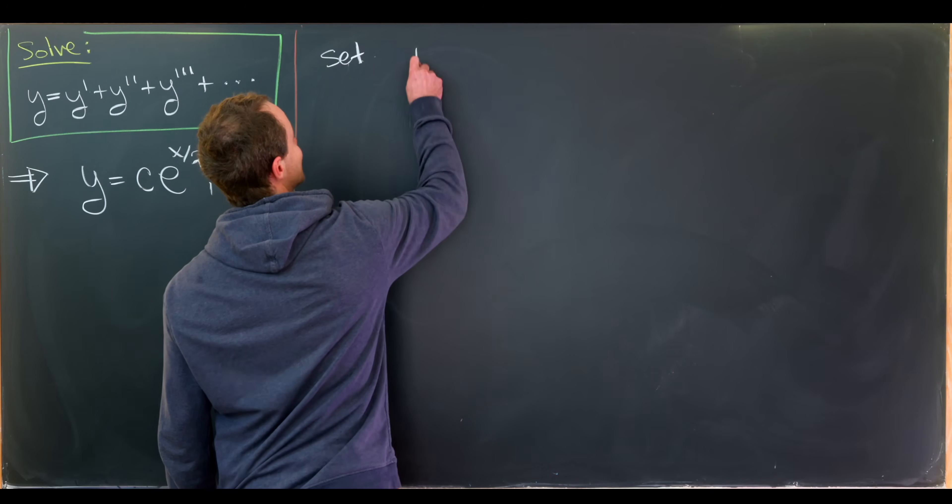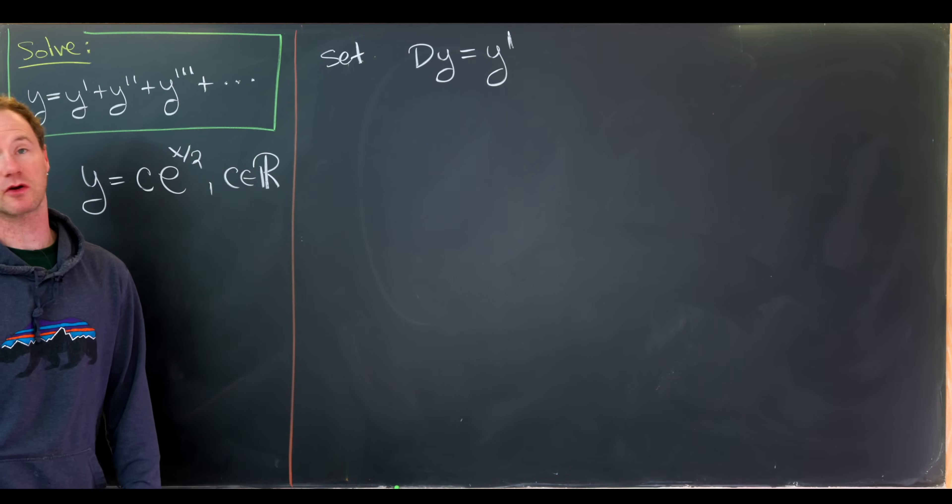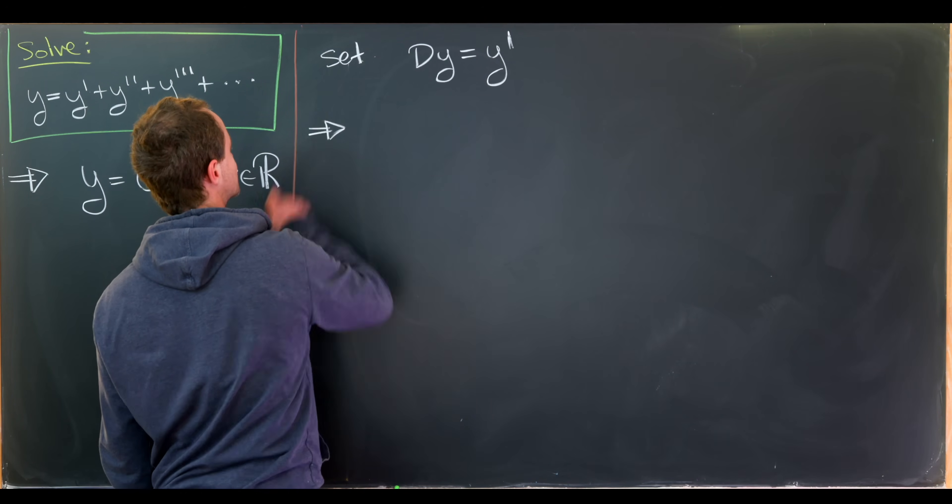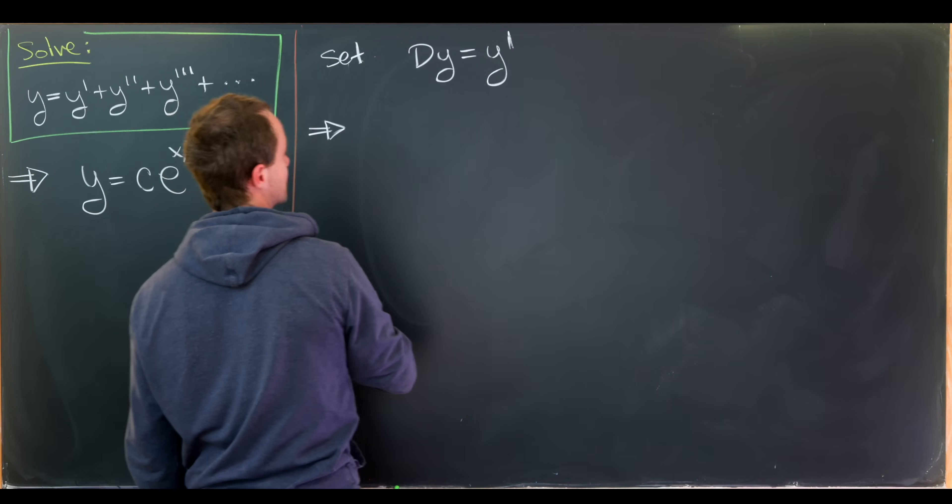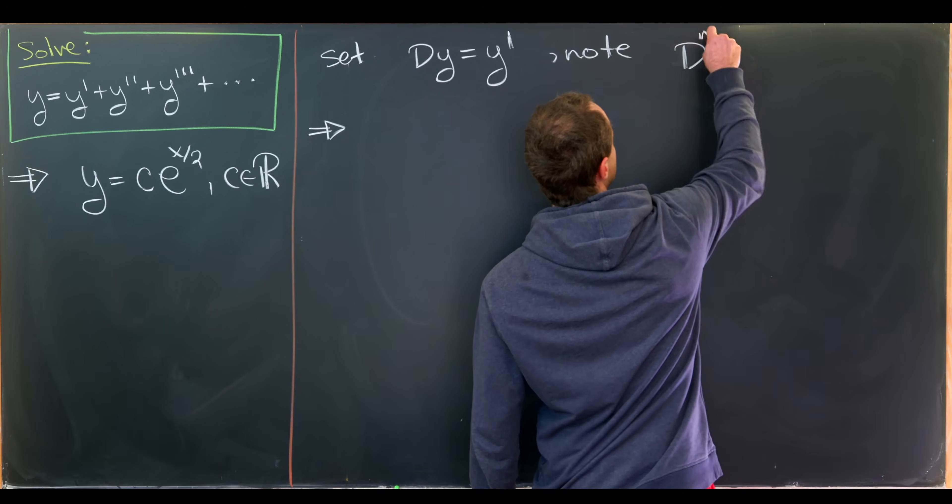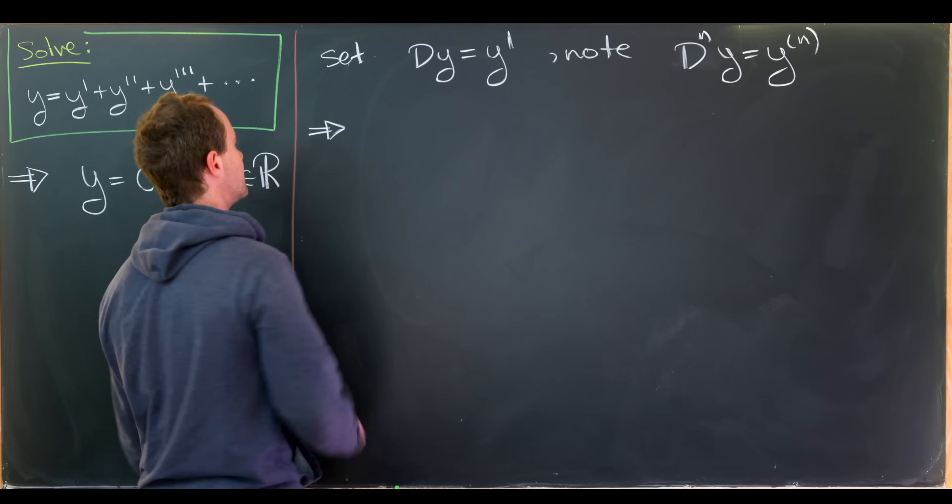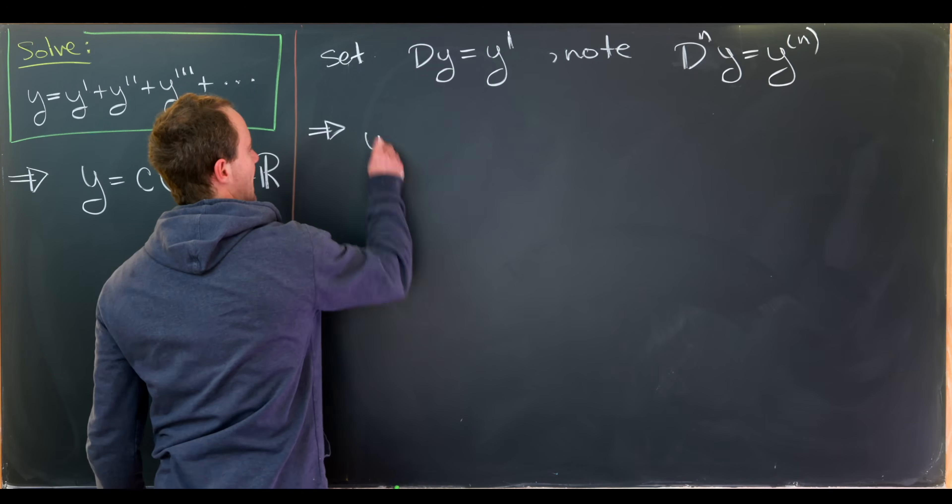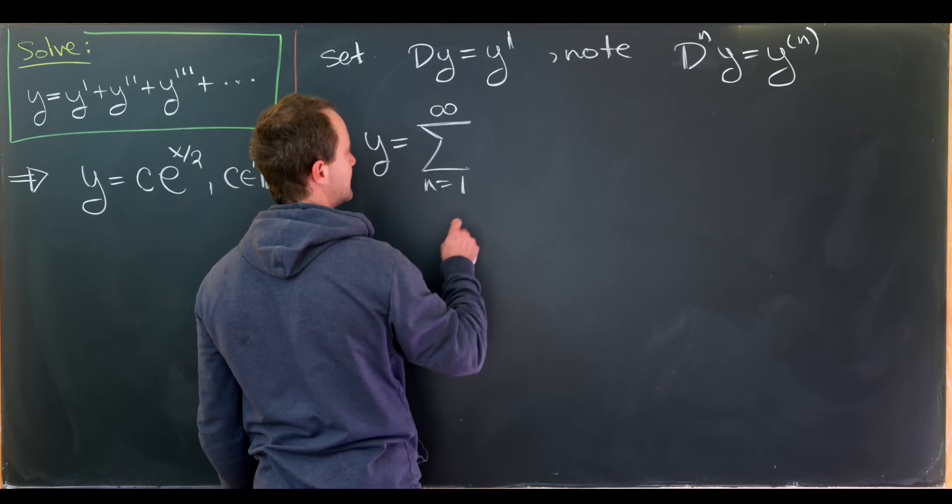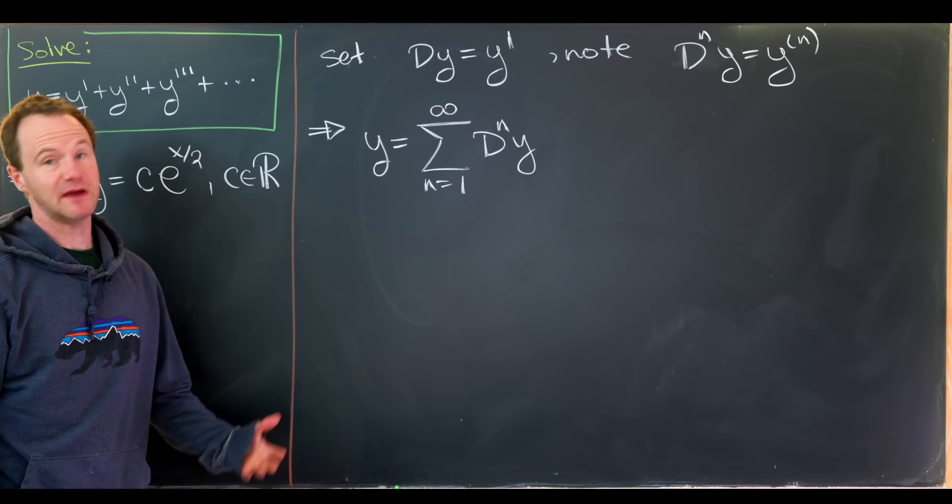I'm gonna introduce some notation. So I'll set d of y equal to y prime. So in other words this d is our derivative operator. And now I'll rewrite our differential equation using this derivative operator. Let's just note that d to the n power operating on y is the nth derivative of y.